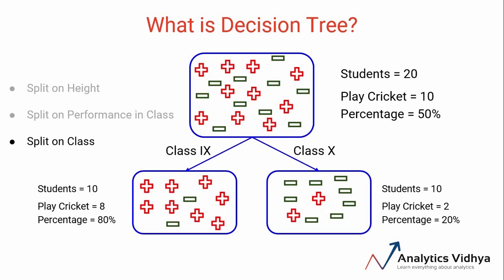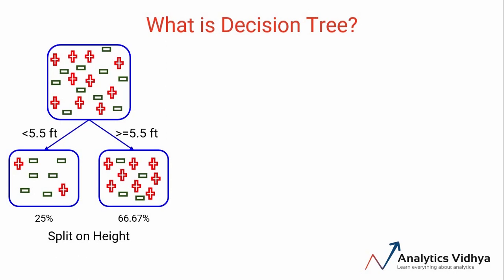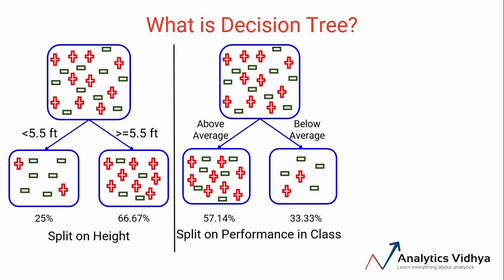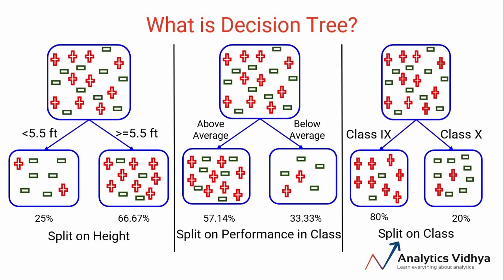Every time we split the entire data into two subsets based on certain conditions or decisions, and that's how we got a decision tree. As we saw, this was one decision tree where we split the data based on the height of the students. Here's another decision tree where the decision was made based on the performance of the students in class, and the third tree we looked at split the data based on the class of the students.